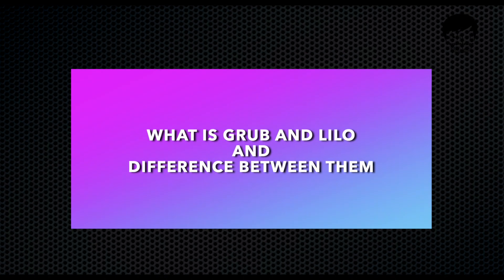What is GRUB and LILO, and what is the difference between them? Both are bootloaders for Linux operating systems. GRUB is the newer bootloader used by various operating systems such as Ubuntu, CentOS, and Red Hat. LILO is an older bootloader that was used previously in some operating systems, and most systems have now upgraded to GRUB.